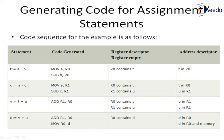Code generation for the assignment statement is shown in the following example, which contains the statement, the code generated, the register descriptor, and the address descriptor. The code generator first moves a into register R0, then performs subtraction. For each instruction, the register descriptor shows R0 containing the temporary variable, and the address descriptor shows t present in register R0. Similarly, subsequent instructions update the descriptors accordingly.